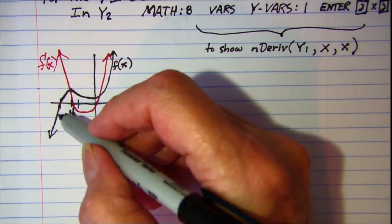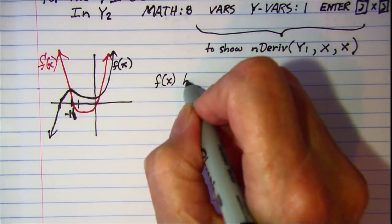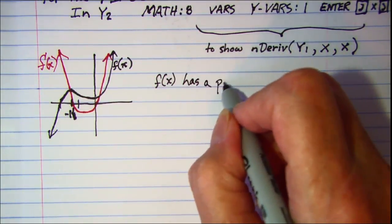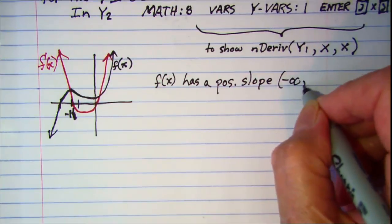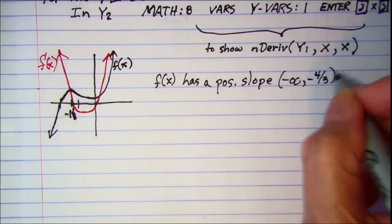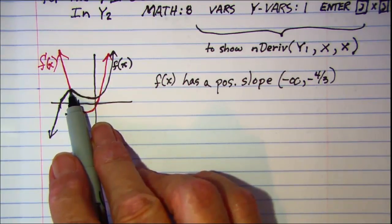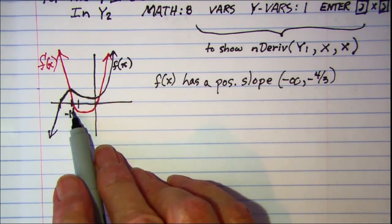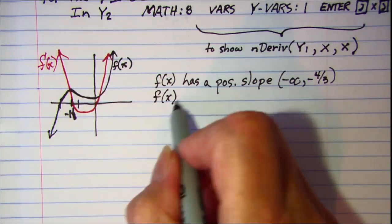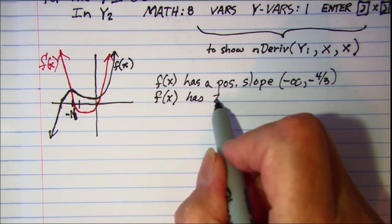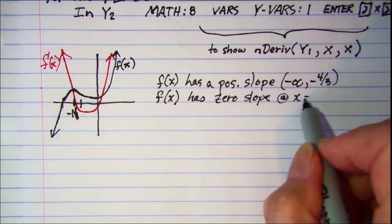So our function goes uphill. In other words it has a positive slope on the interval from negative infinity to negative 4 thirds, which is negative 1 and 1 third. So we have a positive slope up until I hit this point. Then at x equal negative 4 thirds, it has a zero slope.